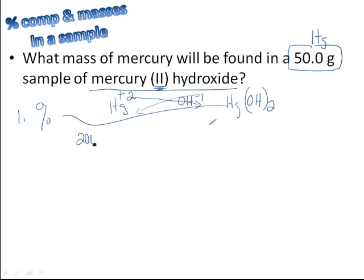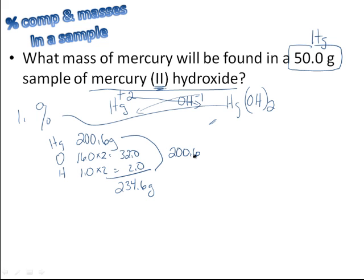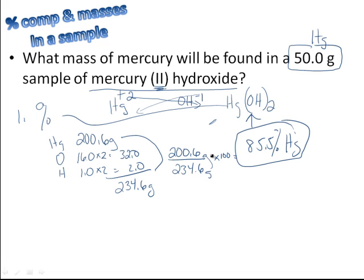Now we want to find out the percent of mercury hydroxide that's mercury. So you do the part that's mercury, 200.6 grams, there's only one of them. Then you do the part that's oxygen, that's 16.0 times 2, 32.0, and then you do the part that's hydrogen, 1.0 times 2 equals 2.0. Add this all up, and you get a grand total of 234.6 grams. Now we want the percent that's mercury, so we do 200.6 divided by the whole thing, 234.6 times 100, and that comes out to 85.5% mercury.